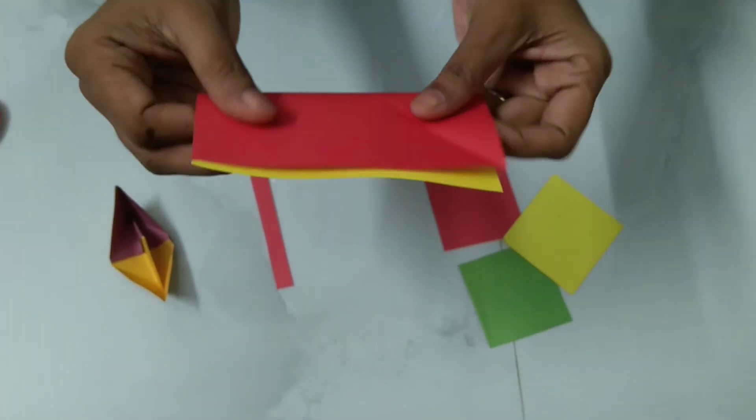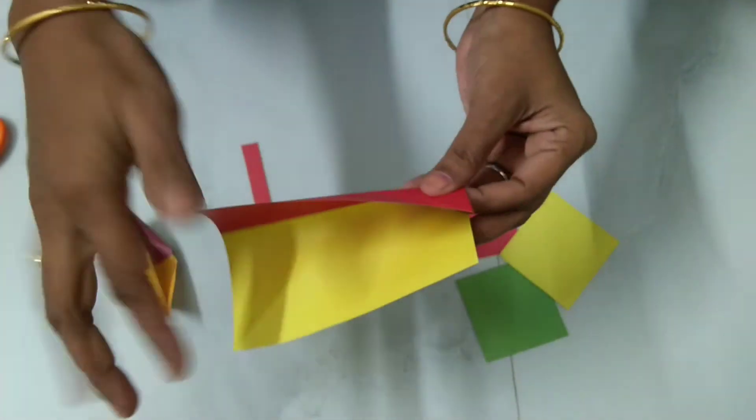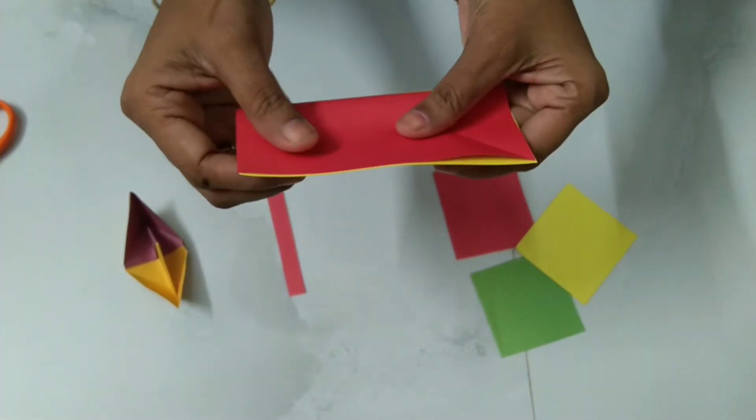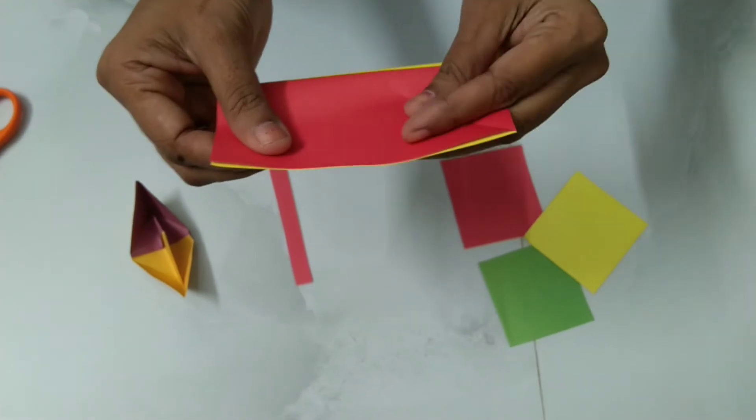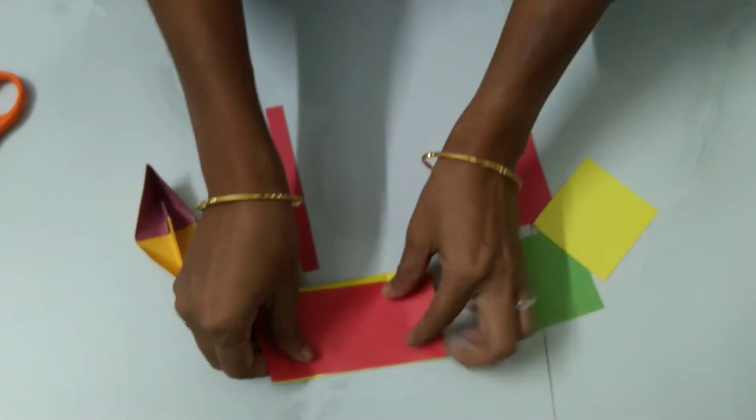Now let's start the steps. First of all, we need to fold the square from the center. This will be our first fold. Fold it properly.